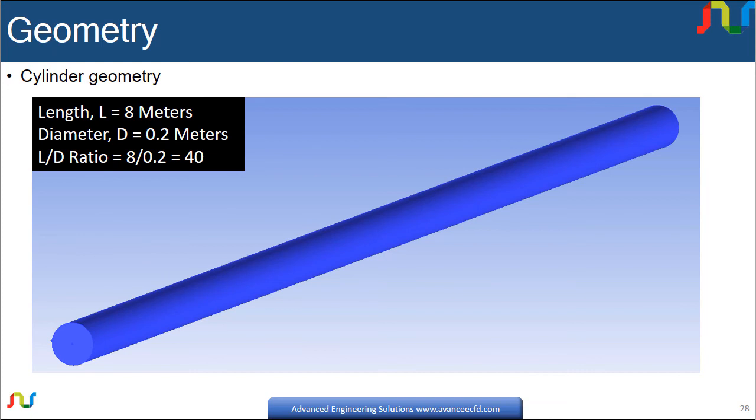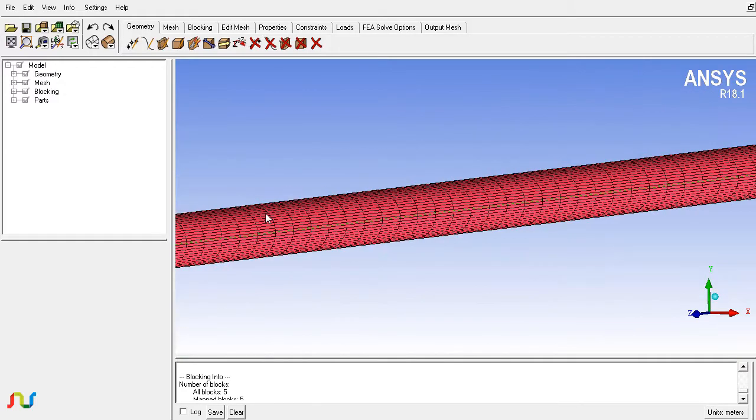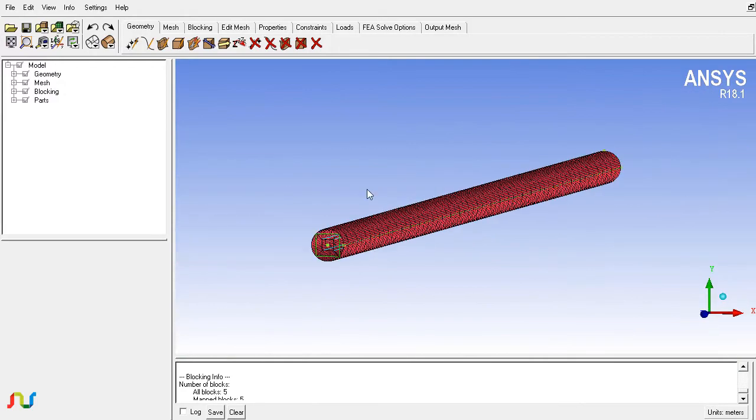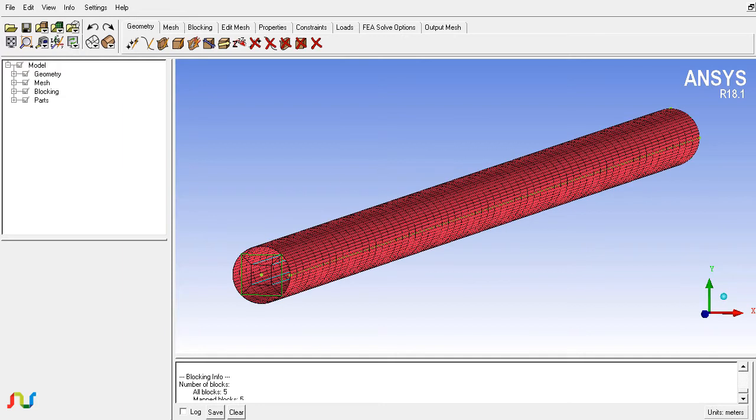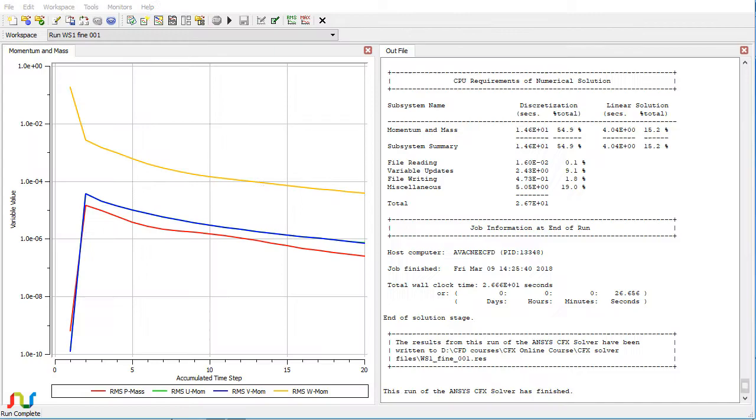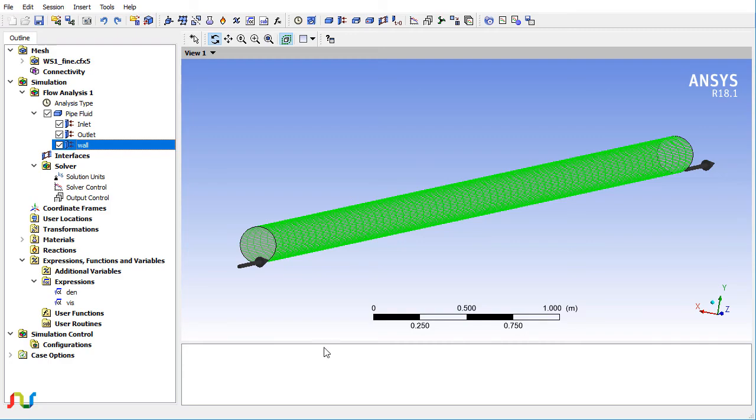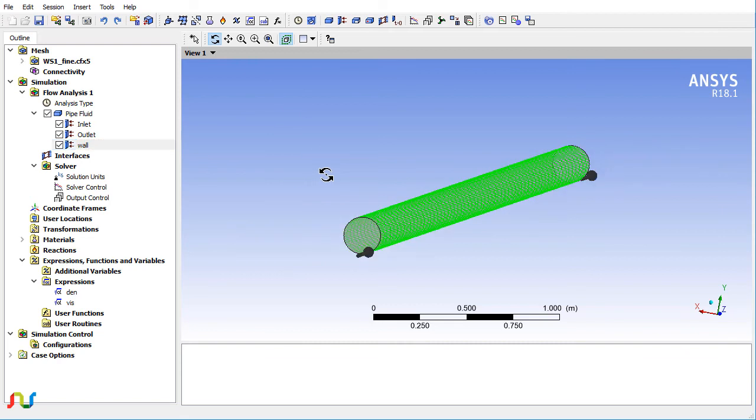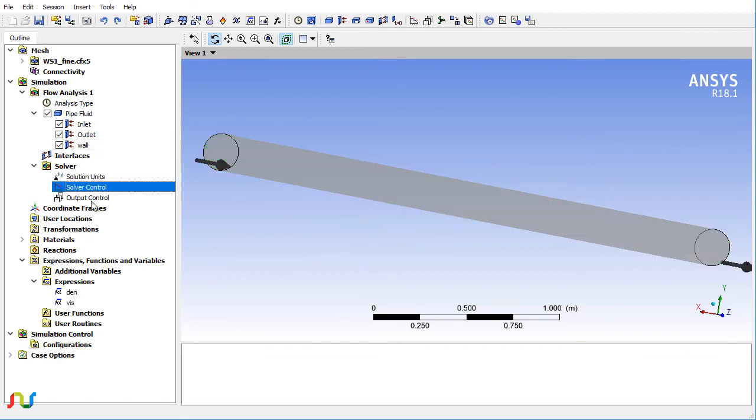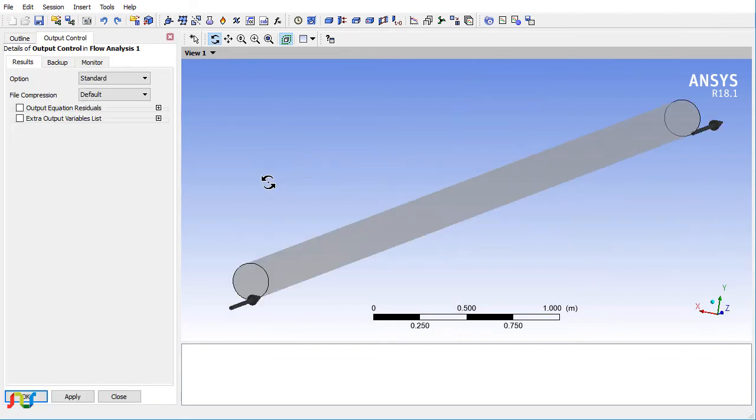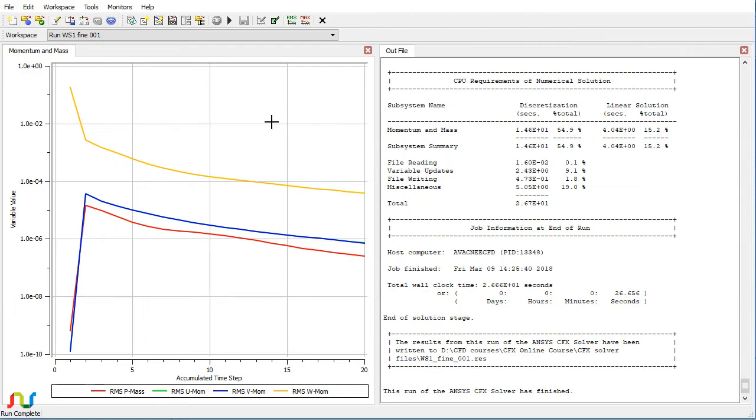For example, here you can see that we have created the hexamesh in ICEM CFD. Here I have set up the problem in CFX Pre like the solver control, output control, and here we have the solution in the CFX Solver. I will discuss various different and advanced options in the CFX Solver as well.